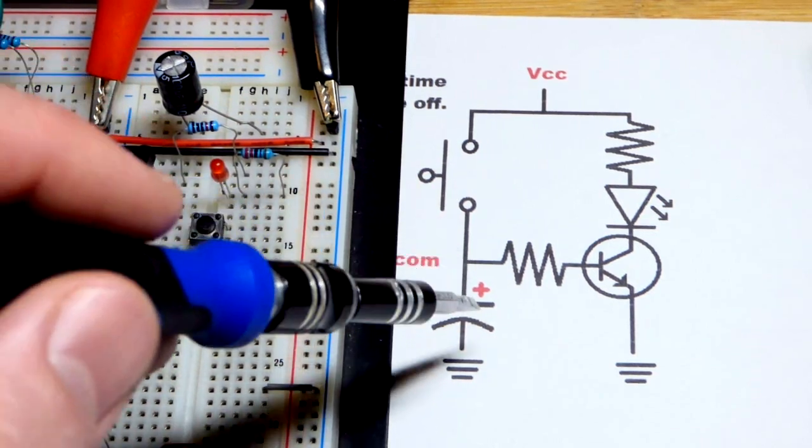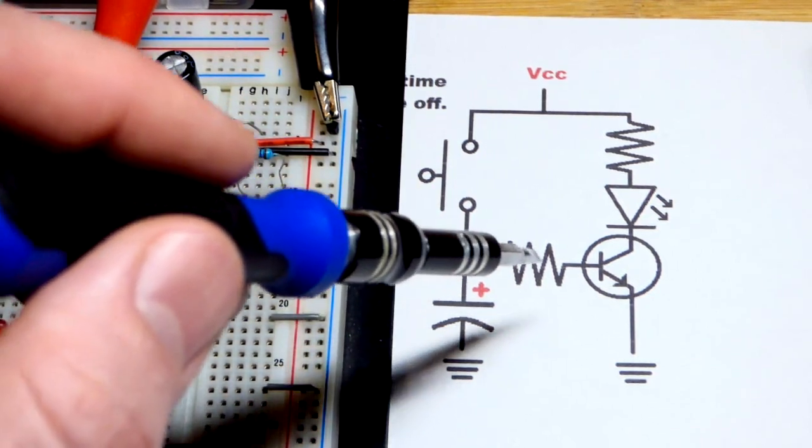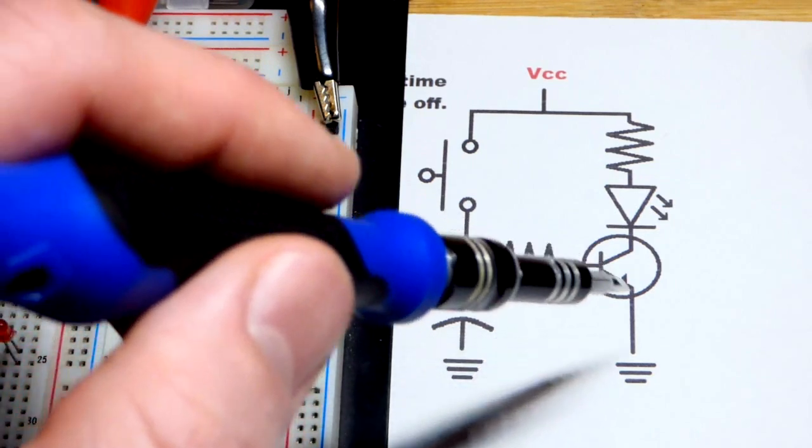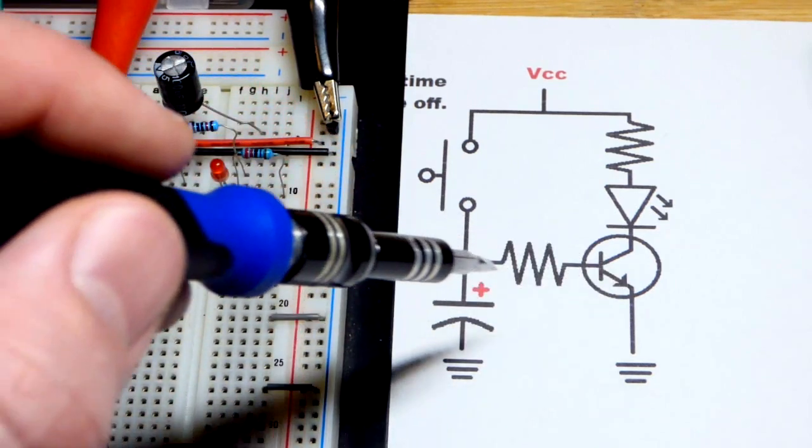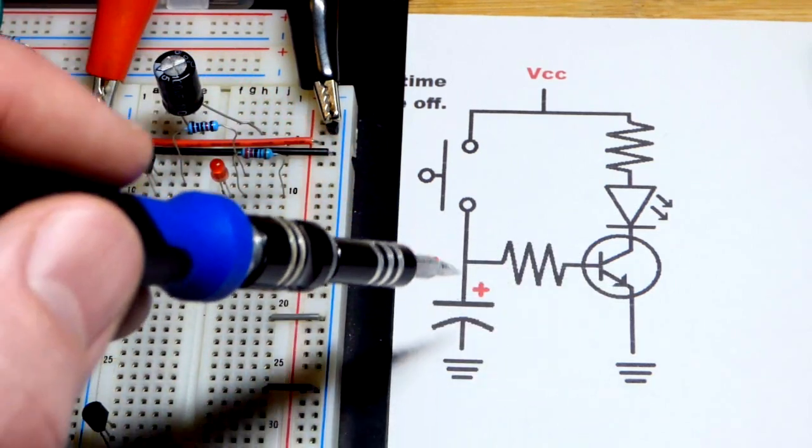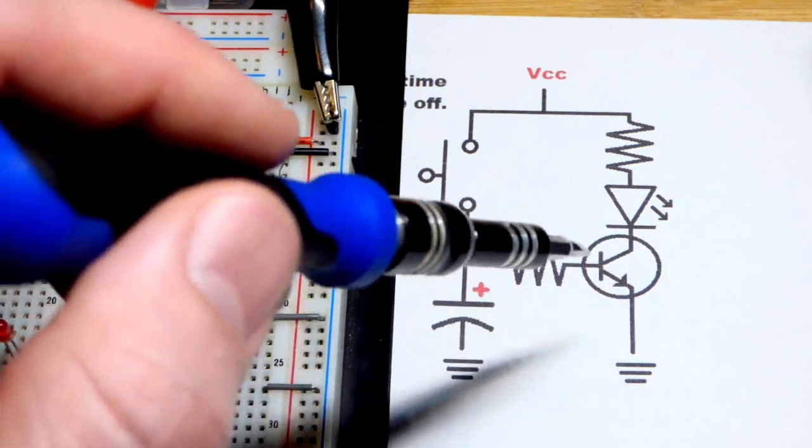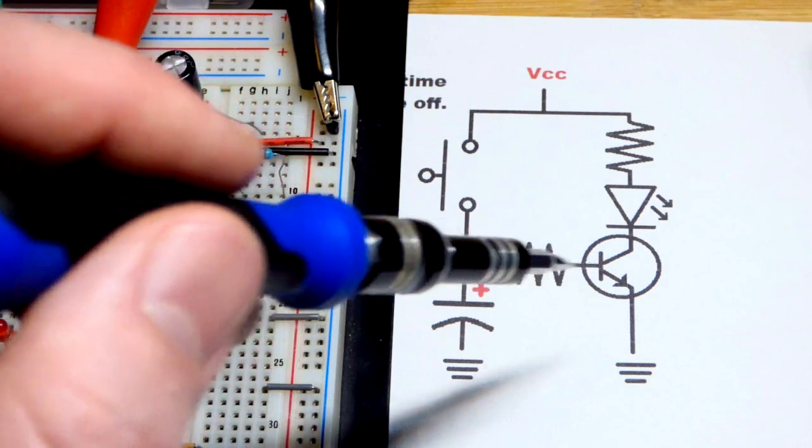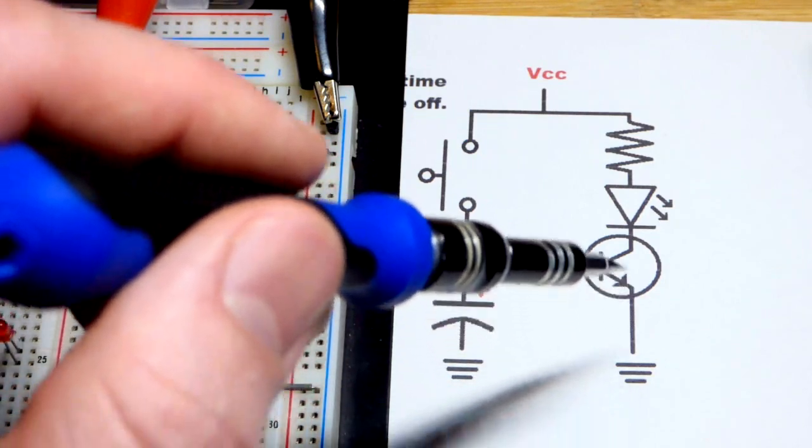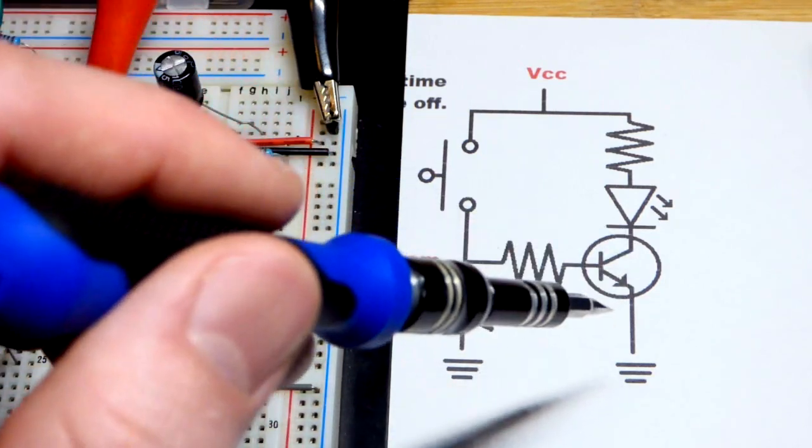When we release the switch, the capacitor that is fully charged will start pushing current through the base to emitter back to the capacitor. So current is going to flow. At first, it will flow enough to keep the transistor saturated. But then current is going to go down. And at some point, not enough current is going to go from base to emitter to keep it fully conducting, saturated.